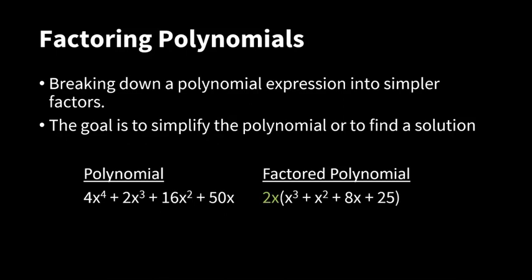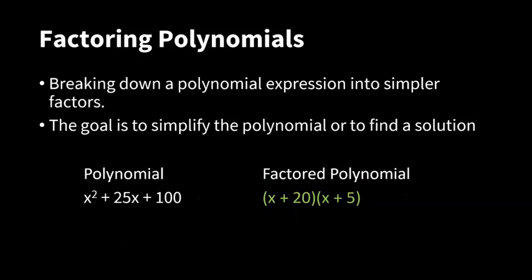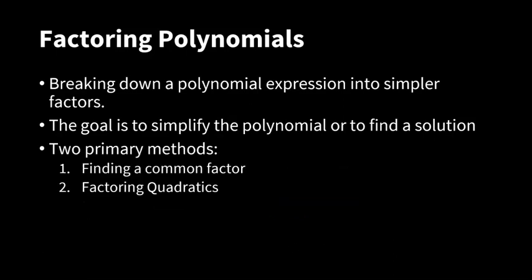What does it mean to factor a polynomial? This is a polynomial and this is a factored polynomial. You can see there is the term 2x which is a common factor and it was factored out of the polynomial. A more complex example is this polynomial, which is quite complex and has a factor which is quite complex as well. Another example: the polynomial x squared plus 25x plus 100 can be factored to two binomials, x plus 20 times x plus 5. This method is called factoring quadratics and it will be covered in the next video.